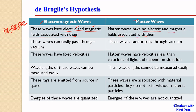Matter waves do not have such electric or magnetic fields associated with them. That is the basic difference between matter waves and electromagnetic waves. Electromagnetic waves can easily pass through vacuum, but matter waves cannot pass through vacuum. Similarly, electromagnetic waves have a fixed velocity of approximately 3 × 10⁸ meters per second, while matter waves have velocities less than this and they also depend on the situation.